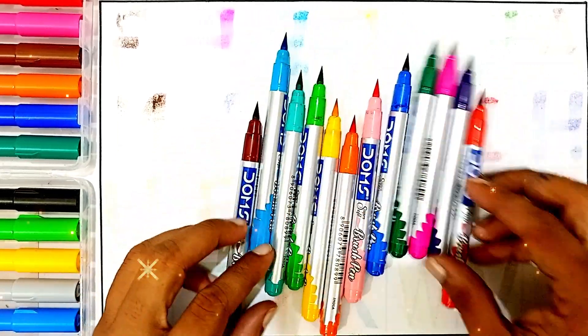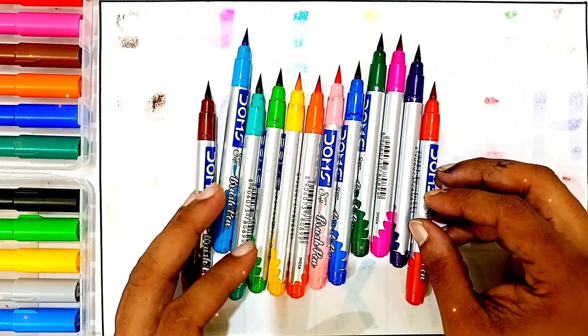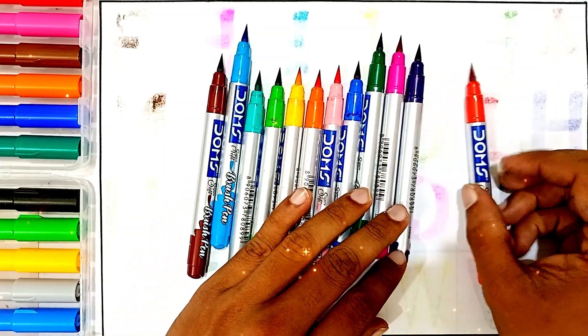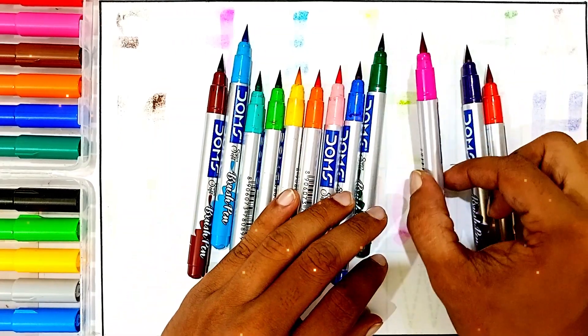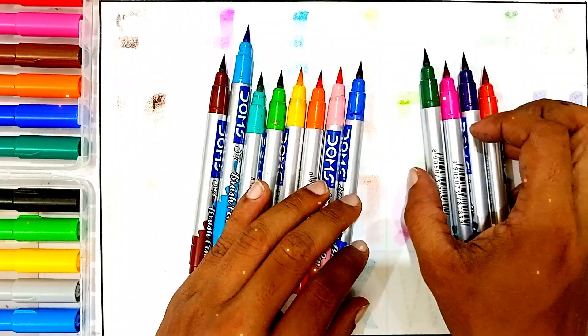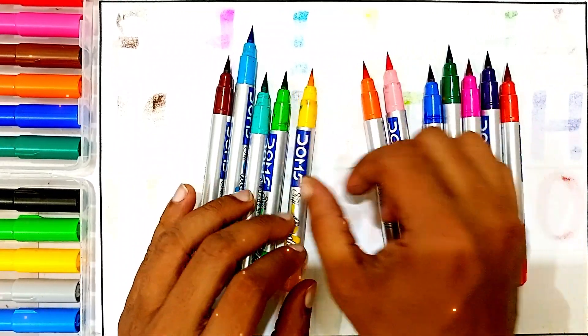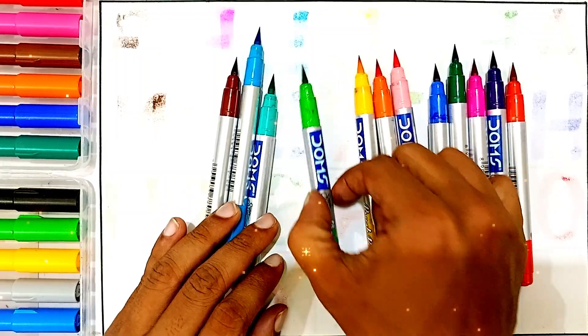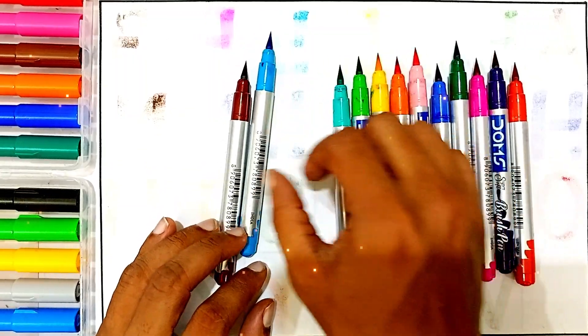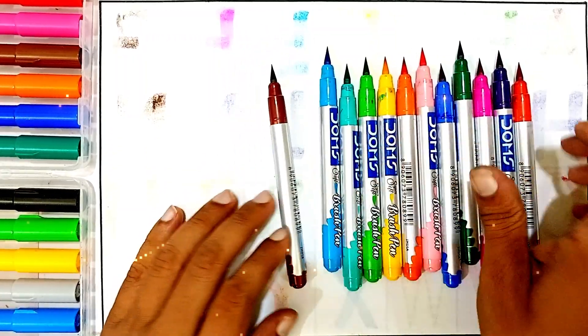Hello kids, let's learn some colors then reading and writing ABC. Red color, purple color, light pink color, green color, blue color, light pink color, orange color, yellow color, light green color, sea green color, sky blue color, brown color.